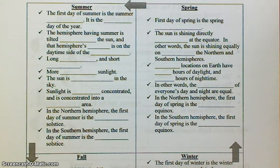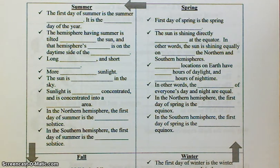The first day of summer is the summer solstice. It is the longest day of the year. The hemisphere having summer is tilted toward the sun, and that hemisphere's pole is on the daytime side of the terminator. Next, long days and short nights — you have long days and short nights during the summer.